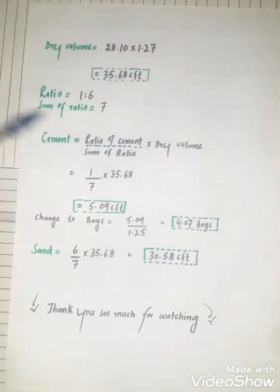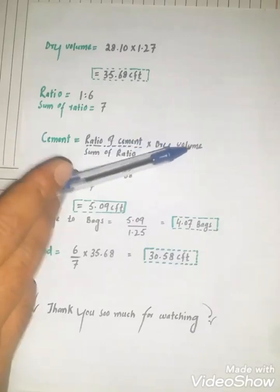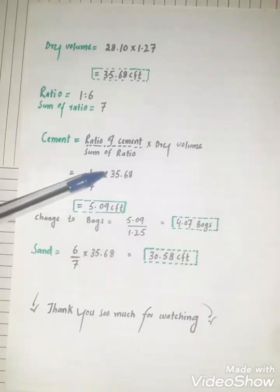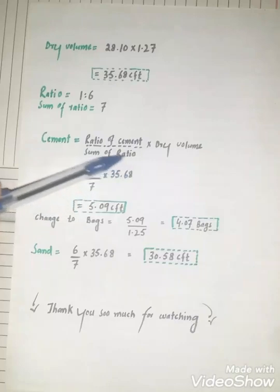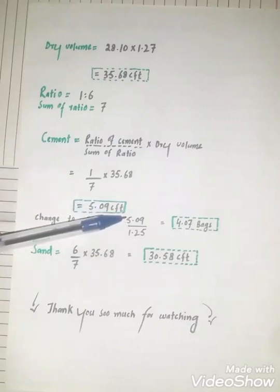Now find cement. Formula used for finding cement: ratio of cement divided by sum of ratio multiply by dry volume of mortar. 1 divided by 7, multiplied by 35.68, this is dry volume of mortar. Cement required: 5.09 cubic feet. This is the amount of cement in cubic feet.